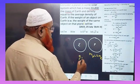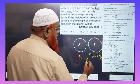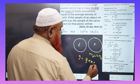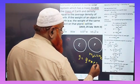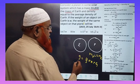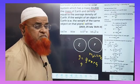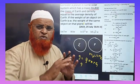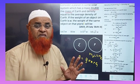You all know there is one formula: g = 4/3 πRρG. This formula is present in almost all the books. This is the basic formula of gravitation.